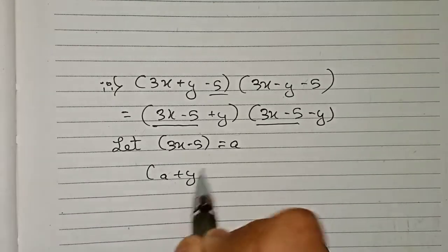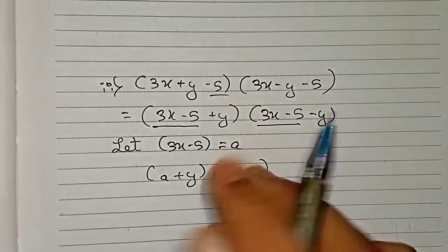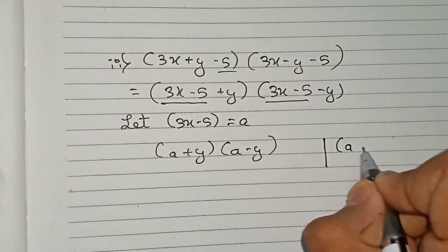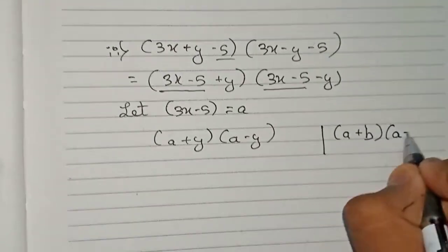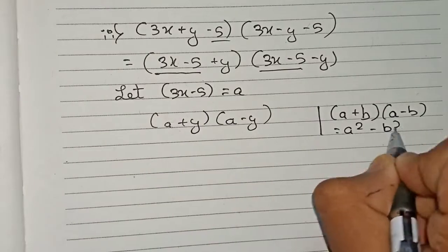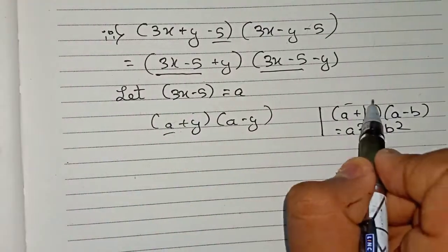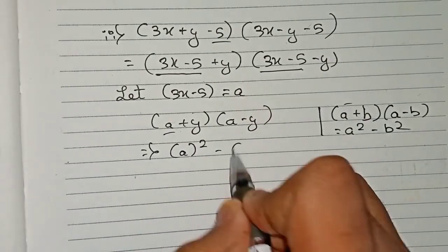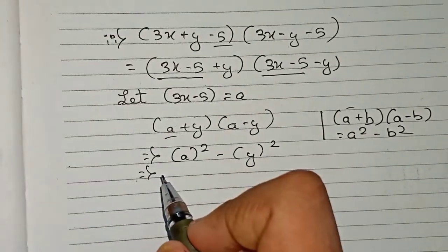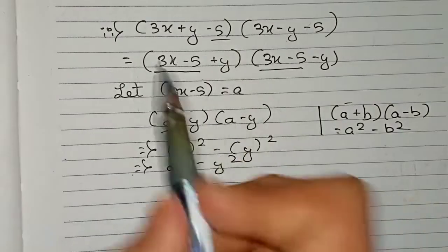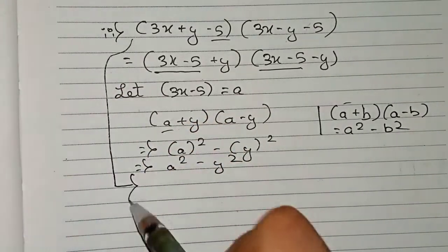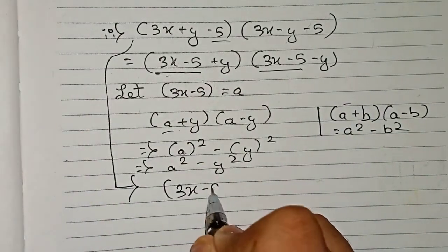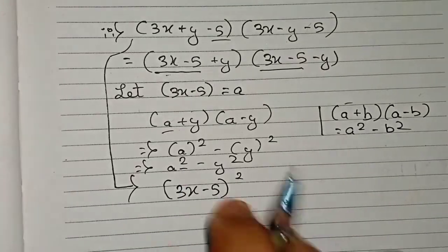Now you can see 3x minus 5 is common on both sides, so let 3x minus 5 equal to a. We now have (a plus y)(a minus y), which matches the identity (a plus b)(a minus b) equals a squared minus b squared. Here b is y, so the result is a squared minus y squared. Substituting back, a squared is (3x minus 5) whole squared, so we get (3x minus 5) whole squared minus y squared.